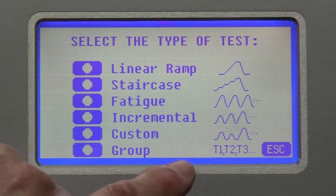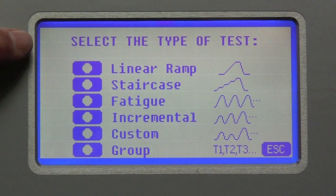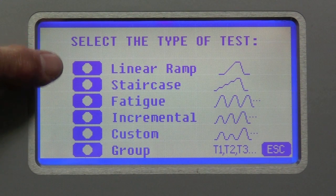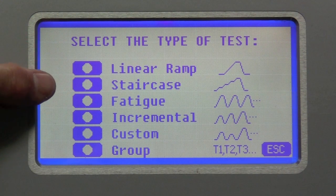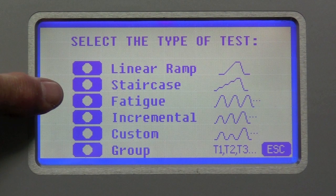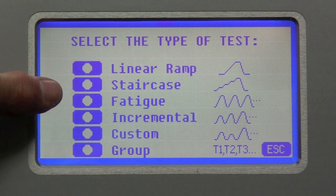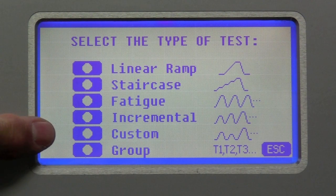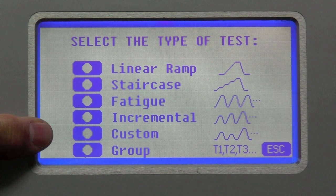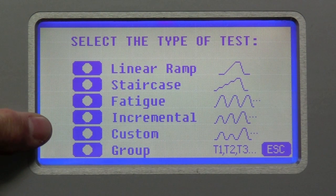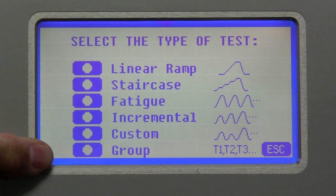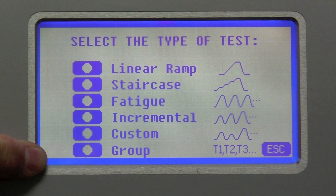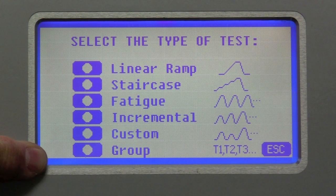And here it gives you an indication of the types of tests that can be created and stored in the HBLT. A basic linear ramp. A staircase that gradually increases in pressure. Fatigue, which repeats the same pressure over and over. Incremental, which cycles and increments the pressure up. Custom, where you're allowed to create tests with up to 100 discrete pressure values. And a group test, where you can link up to 10 different tests together that will run automatically and sequentially.